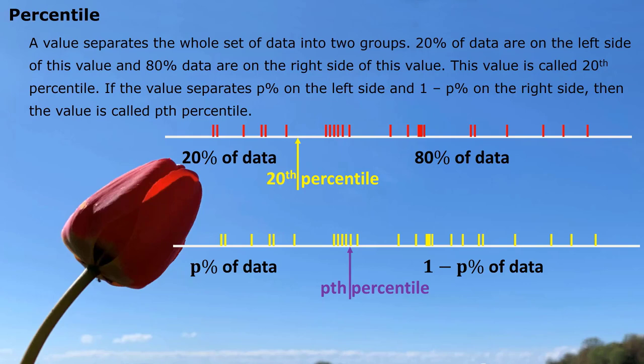A value separates the whole set of data into two groups. 20% of data are on the left side of this value, and 80% of data are on the right side of this value. Then this value is called 20th percentile. Generally speaking, if the value separates p% on the left side and 1-p% on the right side, then the value is called pth percentile.